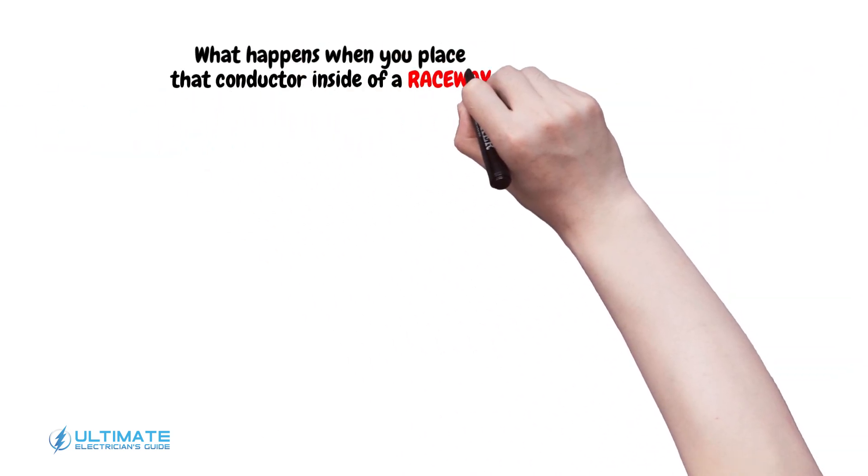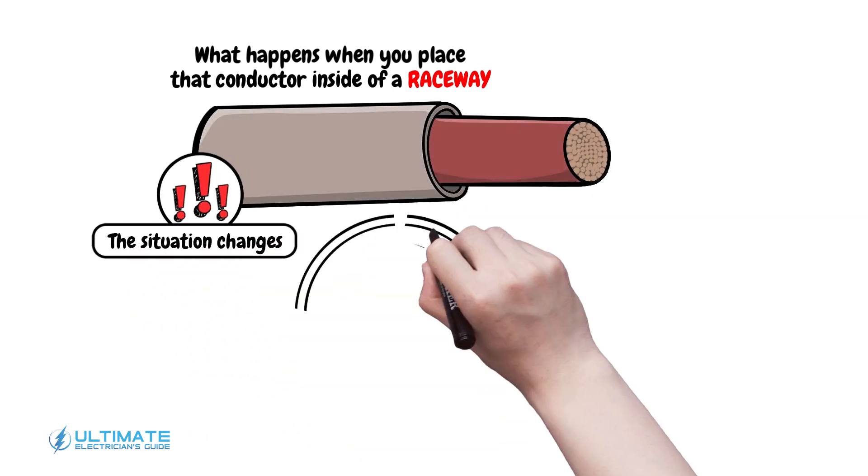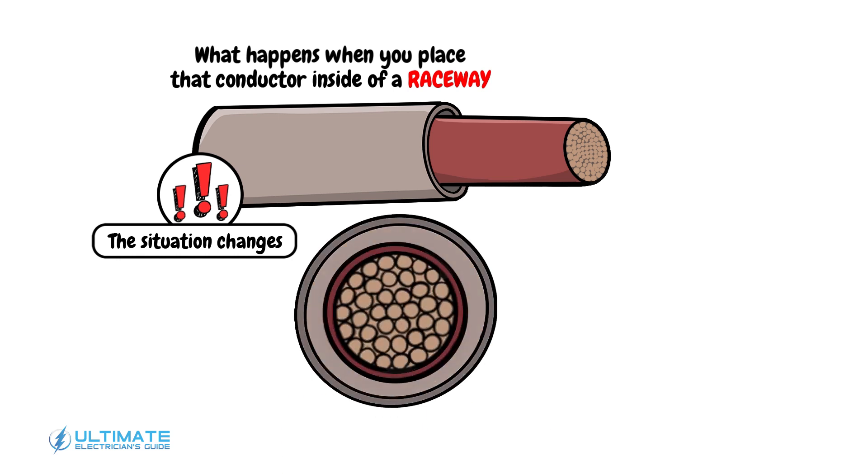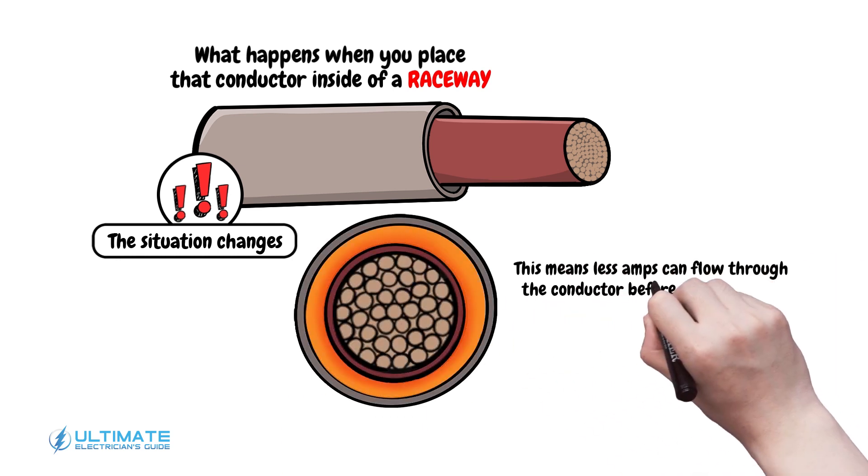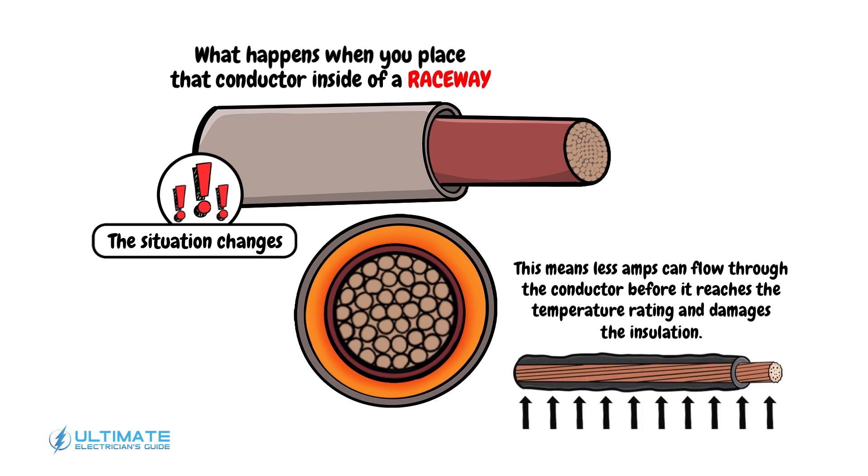Notice what happens when you place that conductor inside of a raceway. The situation changes. The enclosed space traps heat instead of allowing it to freely dissipate. This means less amps can flow through the conductor before it reaches the temperature rating and damages the insulation.